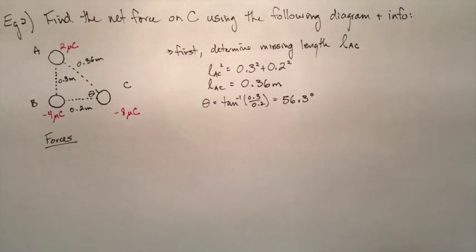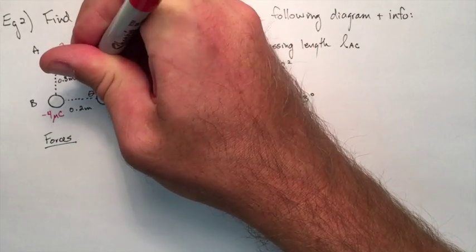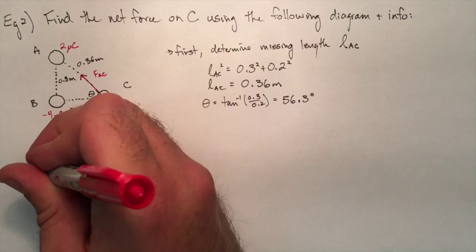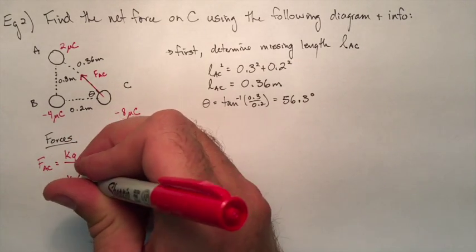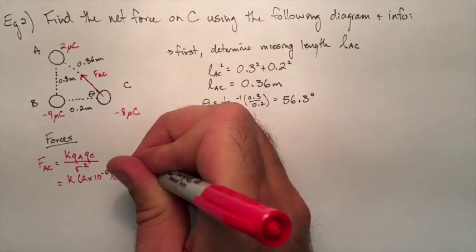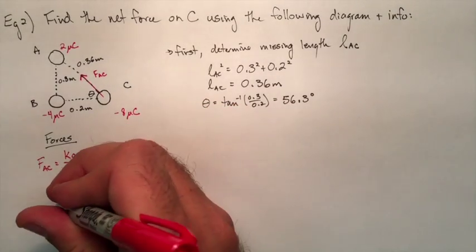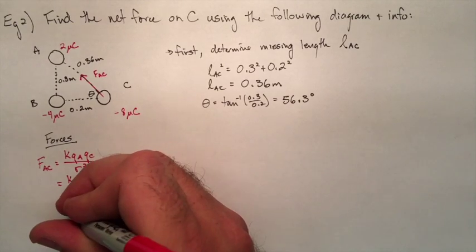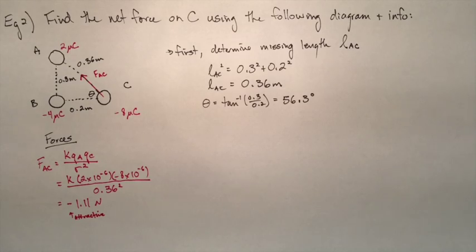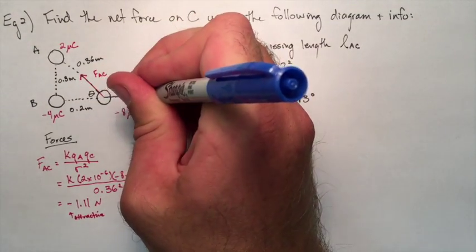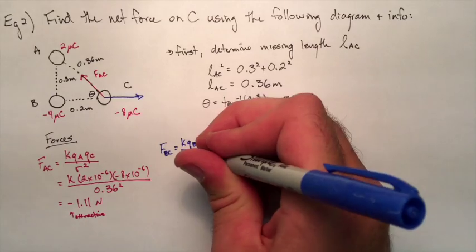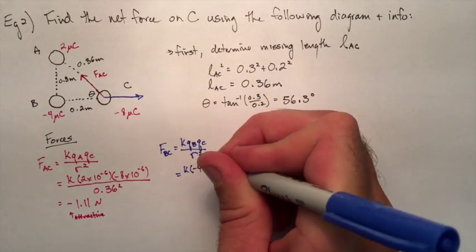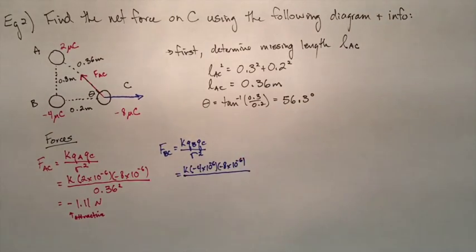So using Coulomb's Law here, let's actually find the force between A and C, and let's find the force between B and C. We know between A and C it's going to be an attraction, so that red arrow, that red force, that is the correct direction that we want to draw it on. So using Coulomb's Law here, we put in the two charges of the objects, divided by the separation squared, we get an answer of negative 1.11 newtons. The negative simply just means here that it's an attraction. Now let's look at the other force, which we know is going to be a repulsion between B and C. We'll color that blue. Let's find the length of that vector. So using Coulomb's Law, K multiplied by the two charges, divided by the separation squared, we get a value here of 7.2 newtons.